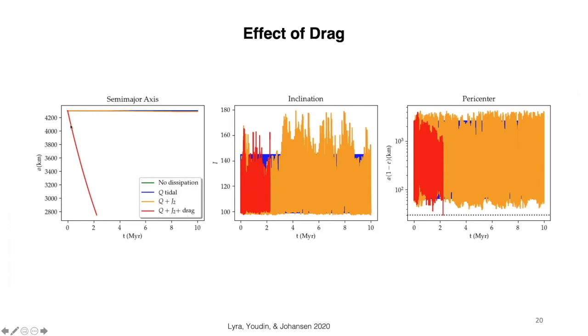And once you include the drag, what is happening here? Now the semi-major axis is decreasing because you are sapping energy from the orbit. You're removing energy from the orbit. And now the Kozai-Lidov oscillations that in the orange simulation alone were not enough to bring to contact. Because the